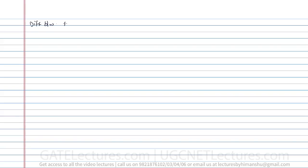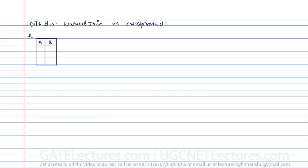Let us start with the difference between natural join and cross product. Assume we have relation R with attributes A and B, containing values (a1, b1), (a2, b2), and (a3, b3). We also have relation S with attributes C and D, containing values (c1, d1) and (c2, d2). Now if you do R cross S, that is the cross product of R and S, you get a new relation.